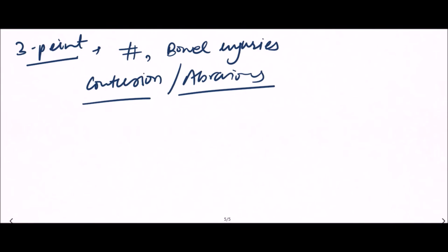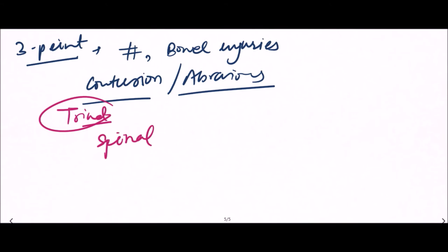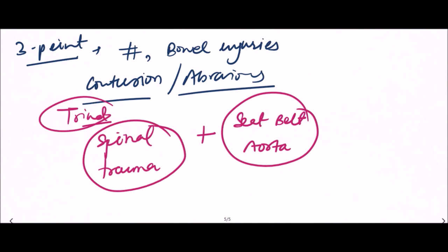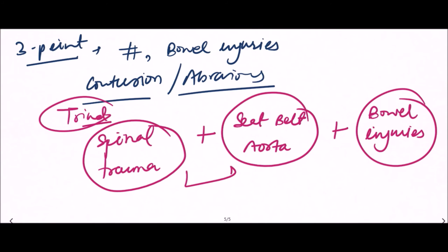The most characteristic injury seen with seat belts is known as the triad of seat belt injuries. This triad consists of: spinal trauma — fracture of lumbar or cervical spine; seat belt aorta — multiple tears in the intima of the aorta; and bowel injuries.